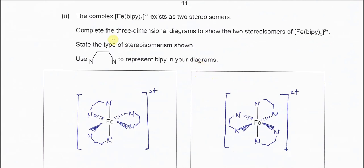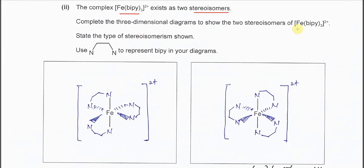Part two. We have a complex between iron(II) and three bipyridine ligands. Because bipyridine is a bidentate ligand, it will form six dative bonds with the iron(II) ion. So we know it is an octahedral complex because it has coordination number six. Because it has three bidentate ligands, we know it will form optical isomers. Three bidentate ligands always form optical isomers.